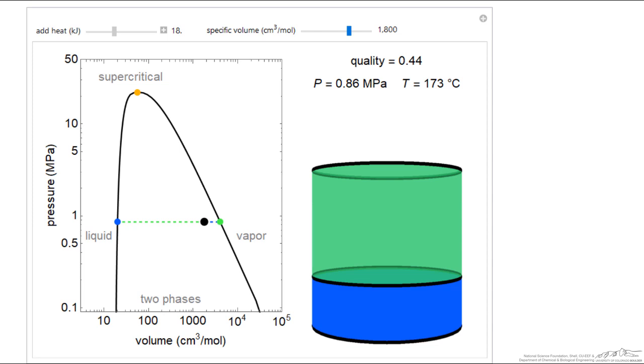If I keep adding heat, I'm going to get to the point where I'm approaching that saturated vapor line. Almost all vapor, we're at 87% vapor. Now we hit a quality of one, and so it turned green indicating we're right on the saturated vapor line.